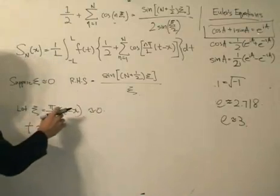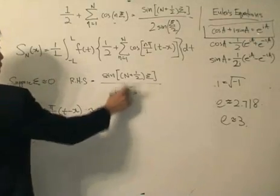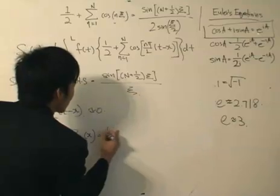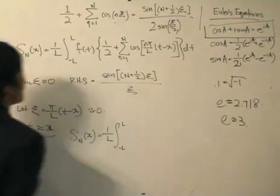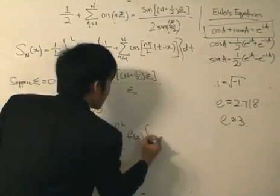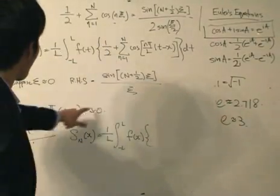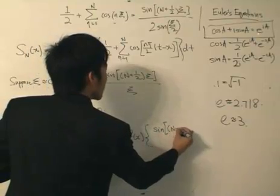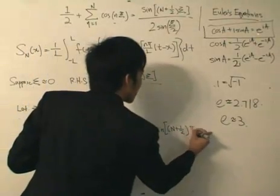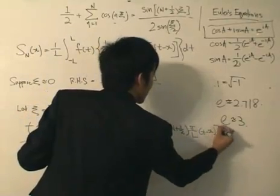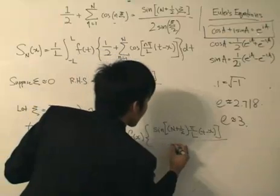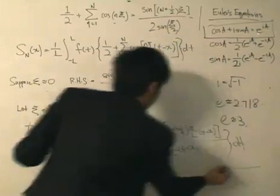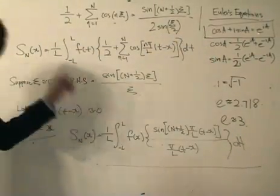So what I'll do is substitute epsilon = π(t - x)/l back into the N-th partial sum. Finally, the N-th partial sum in terms of x equals (1/l) times the integral from -l to l of f(t) times sine((N + 1/2)·π(t - x)/l) divided by (t - x), integrated with respect to t. And there we go — the N-th partial sum without the summation sign. We have achieved objective number one.